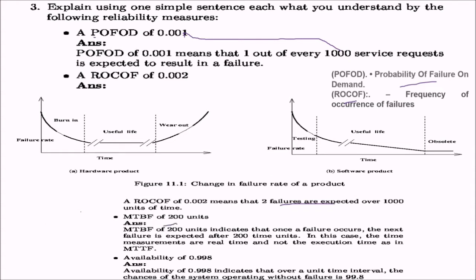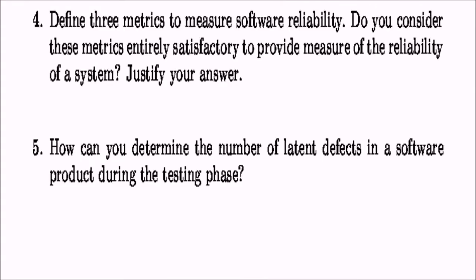MTBF of 200 units — that is mean time between failure — indicates that once a failure occurs, the next failure is expected after 200 units of time. In this case, the time measurements are real time and not execution time as in MTBF. Availability of 0.998 indicates that over a unit time interval, the chances of the system operating without a failure is 99.8% — the software is going to run without failure for 99.8% of the lifetime.